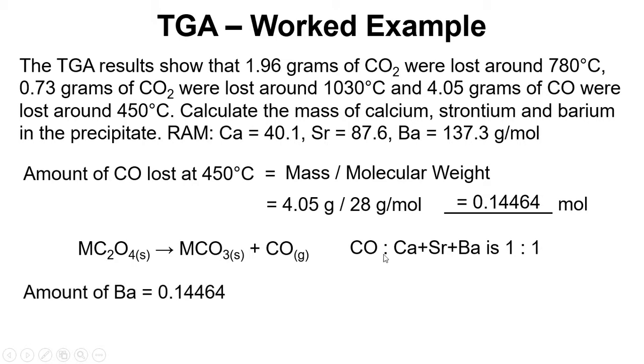So to work out the amount of barium we need this first number. Subtract 0.04455 because from an earlier calculation we know that's the amount of calcium. And then we subtract 0.01659 because again from an earlier calculation we know that that is the amount of strontium.